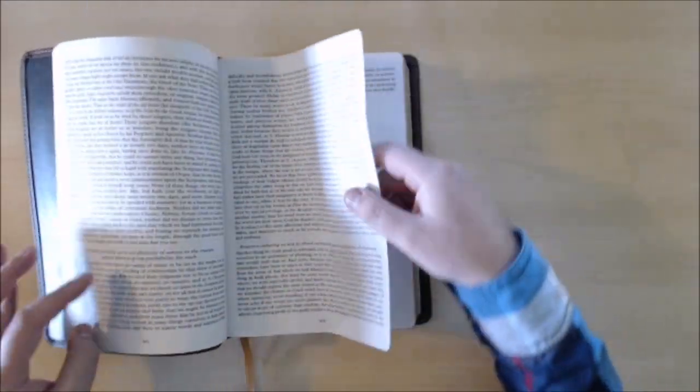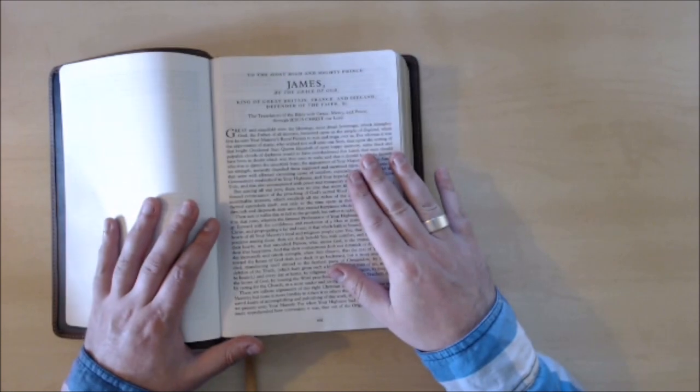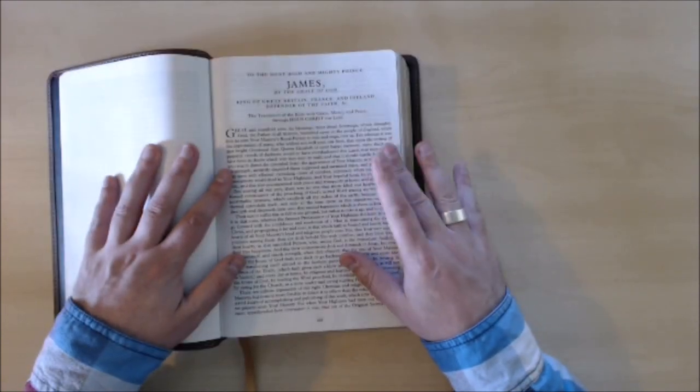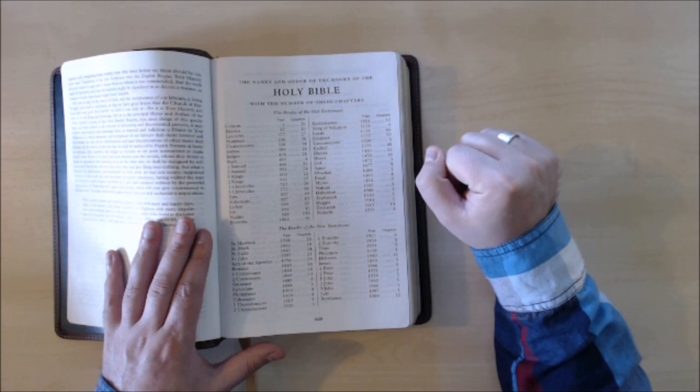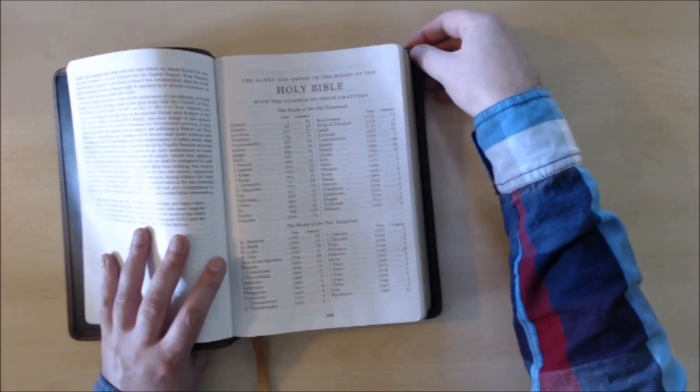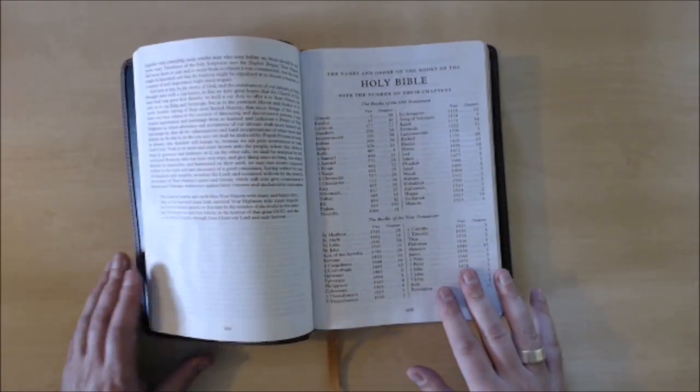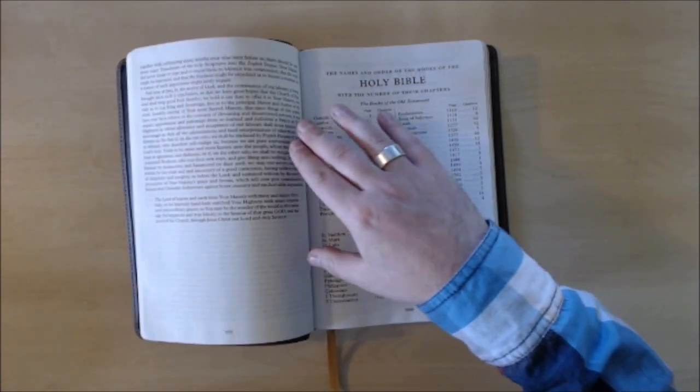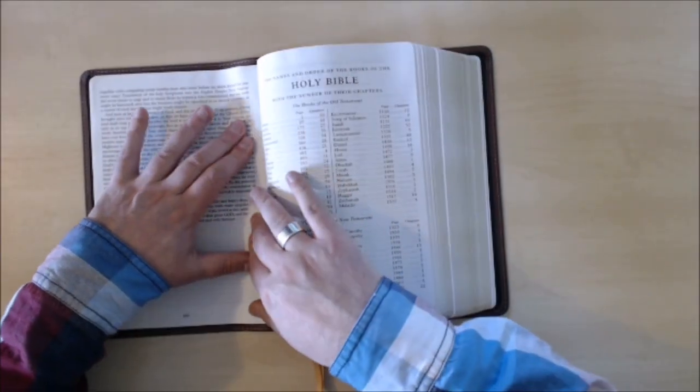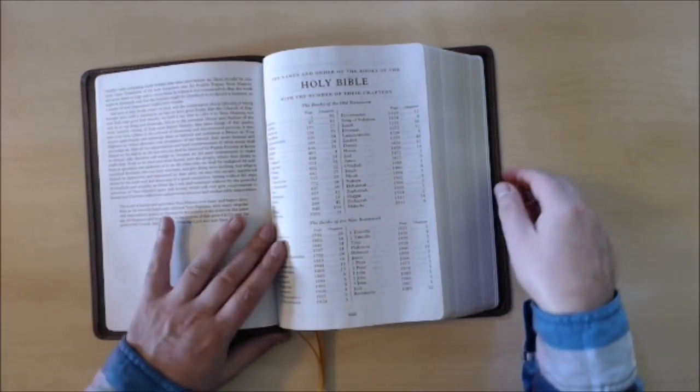It comes also with the letter from the translators to King James and here we have the names of the letters and order of the books of the Holy Bible. At this point the Bible has this thick hinge there that doesn't really go flat but after a little bit of use, there you go, it will just lay down flat no problem whatsoever.